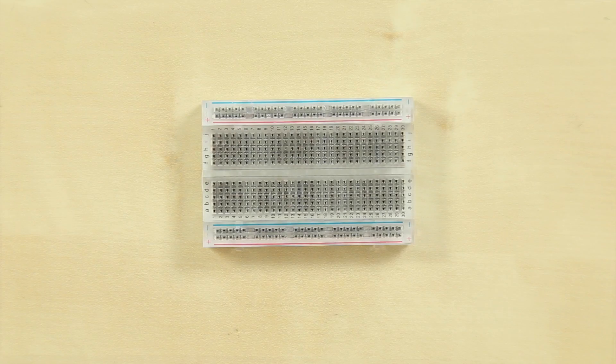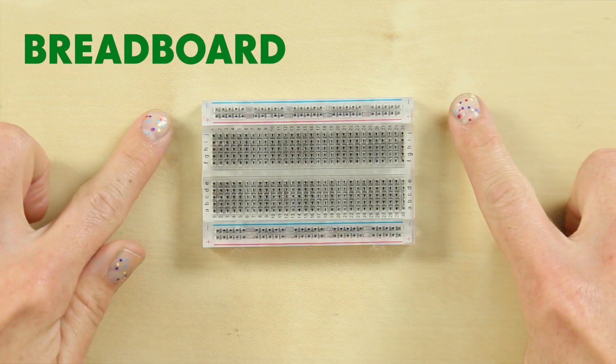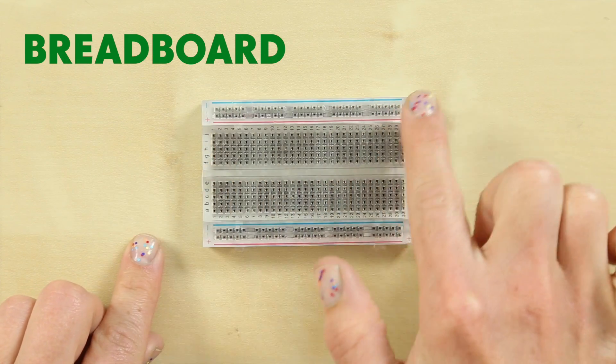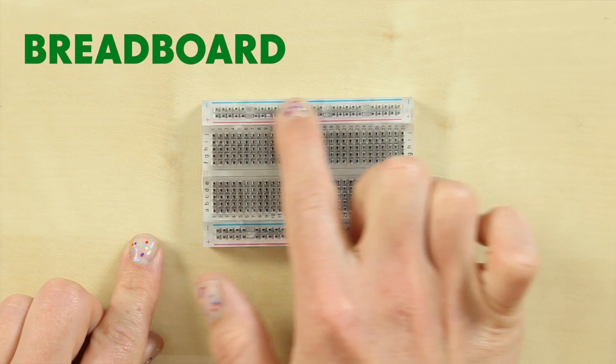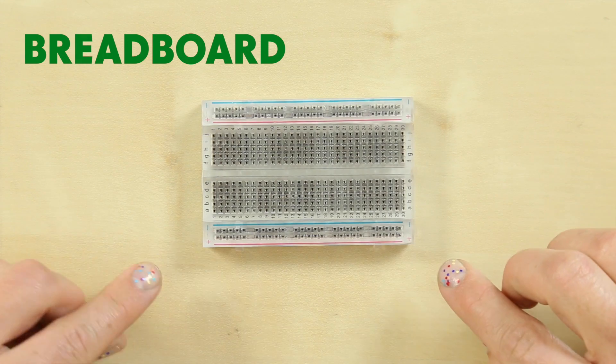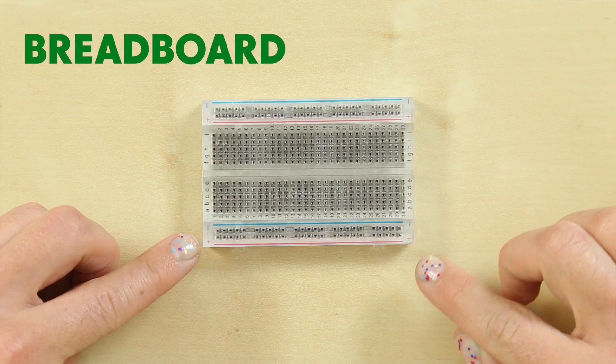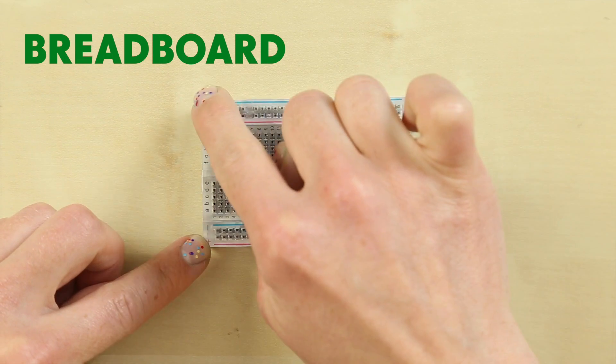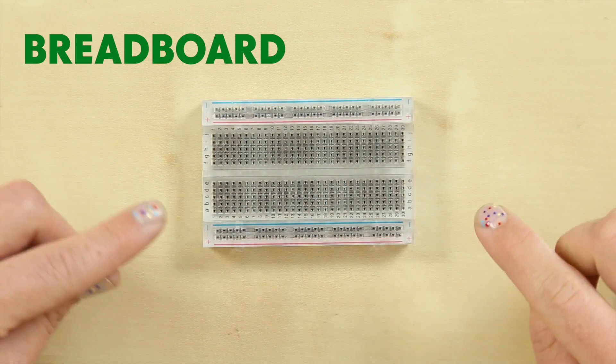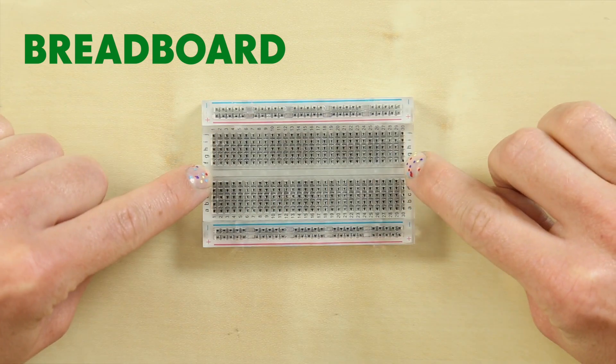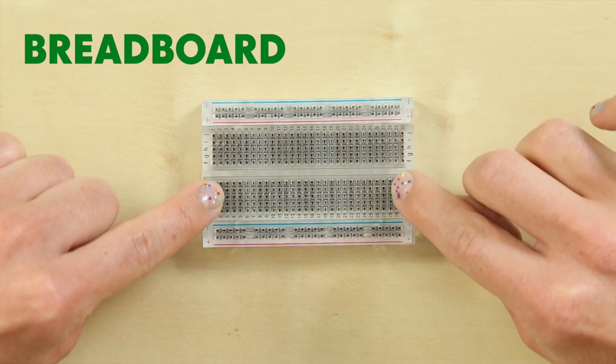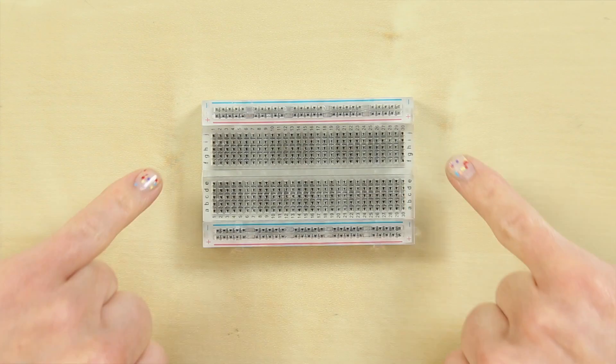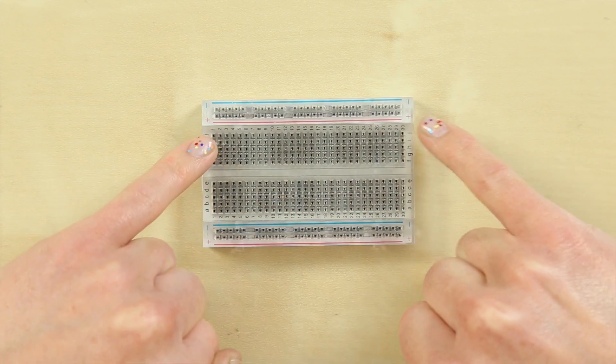The breadboard. This is our first component. Take a look at the breadboard. The horizontal rows at the top and at the bottom which are marked with red and blue are our power rails. They provide a convenient way to supply components with electricity. The power rails are connected all the way along the edges of the board. On the inside you have the opposite, so these rails run perpendicular to the ones on the outside of the board. They're marked with letters and numbers.